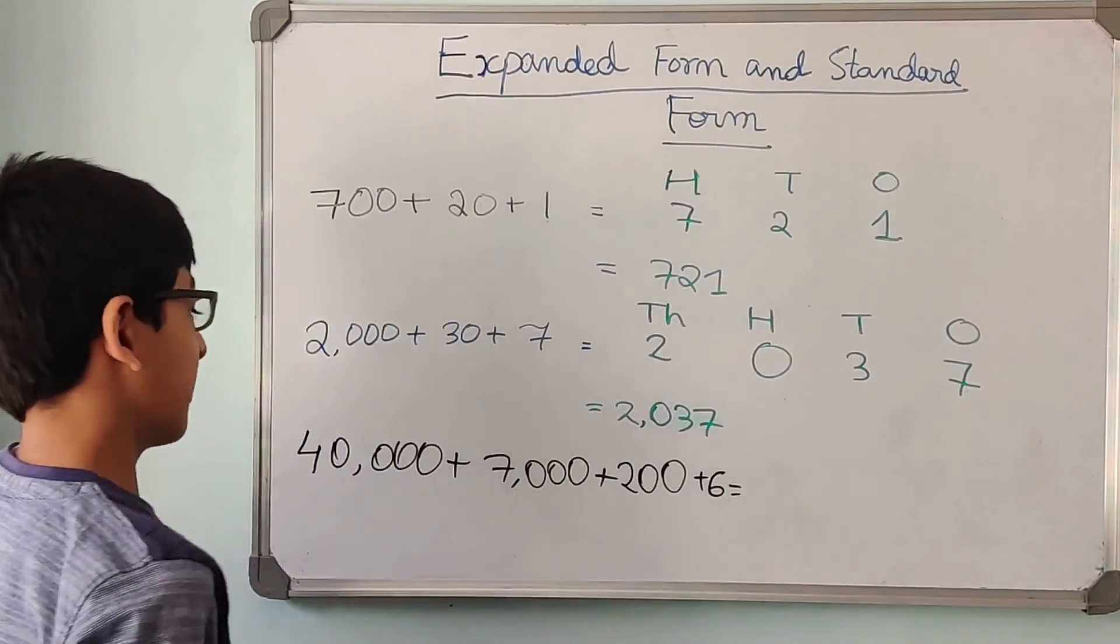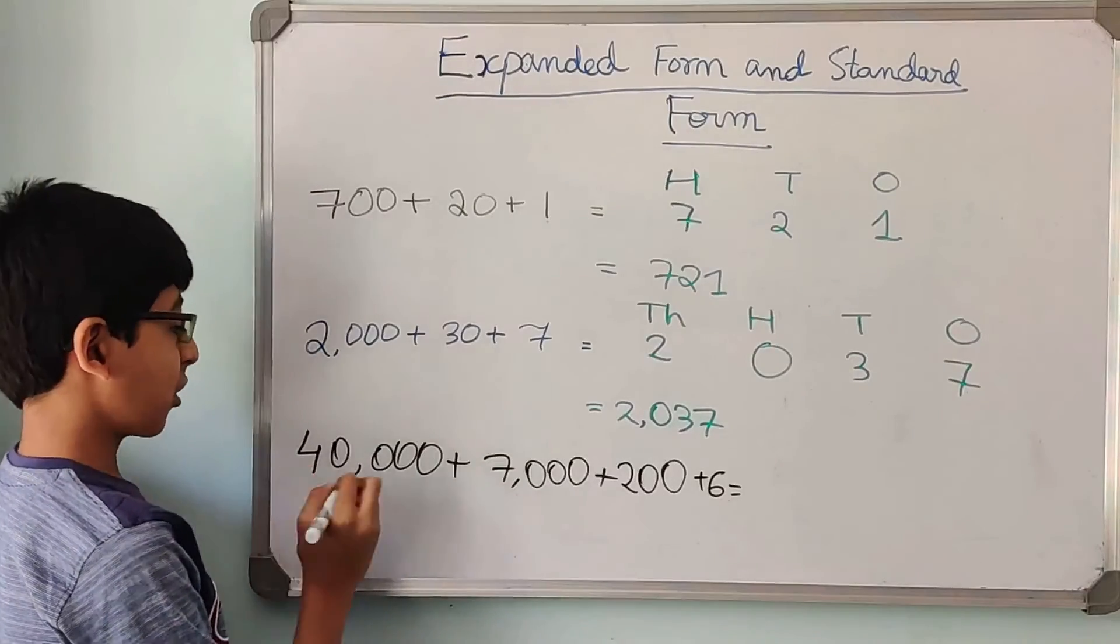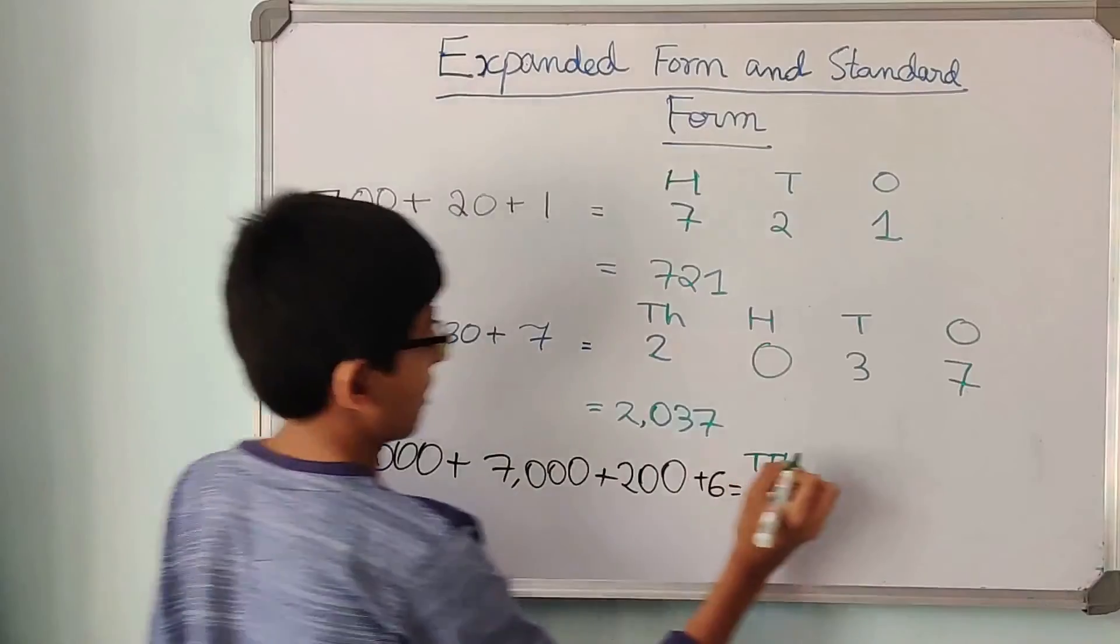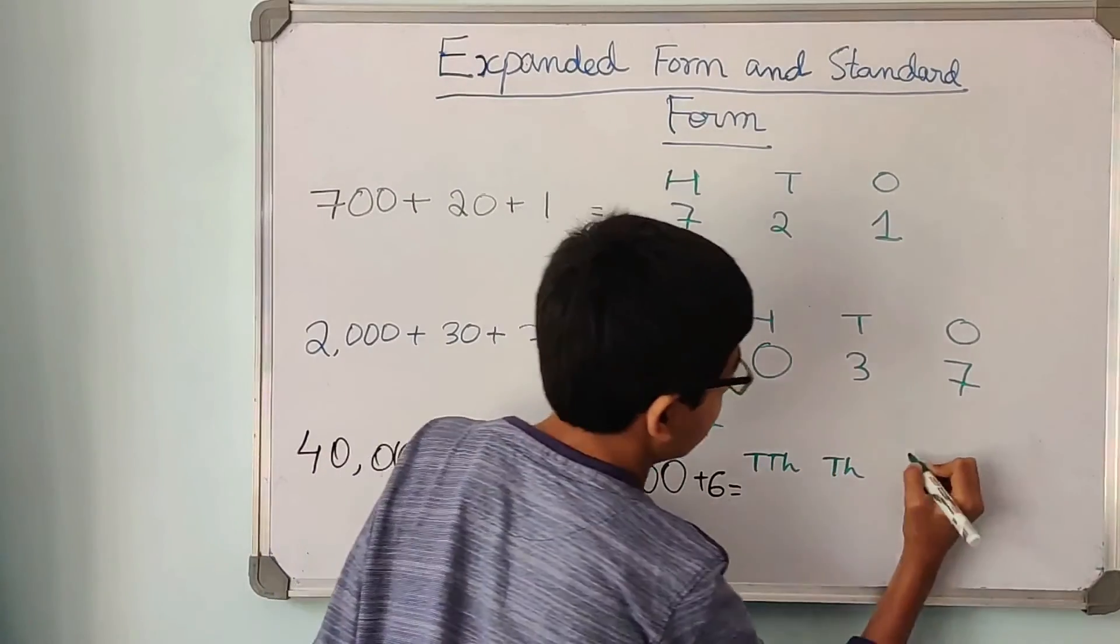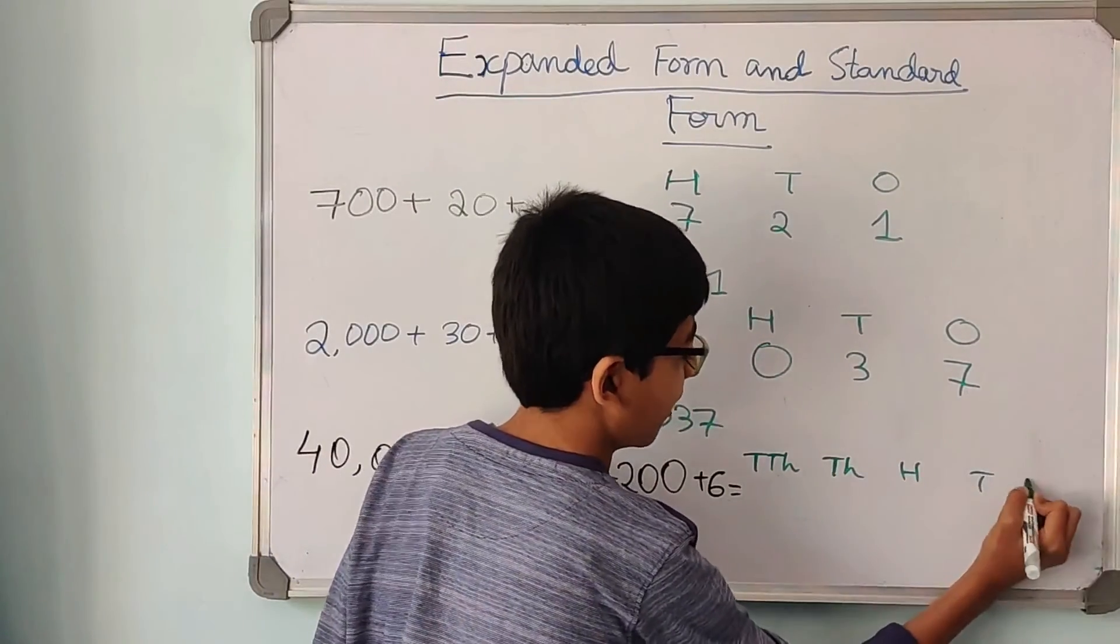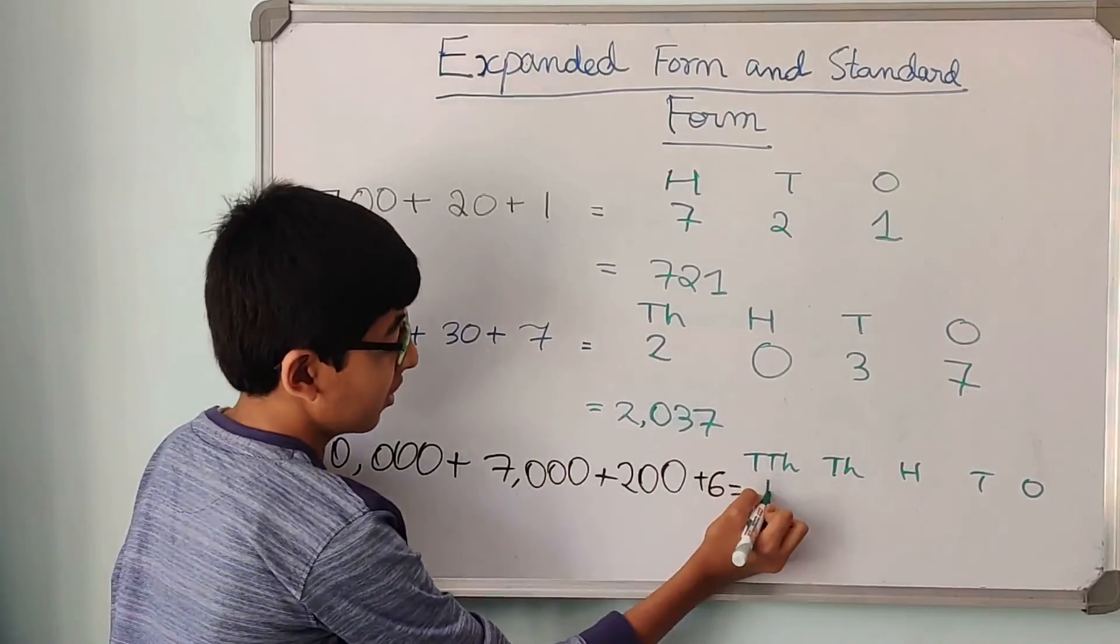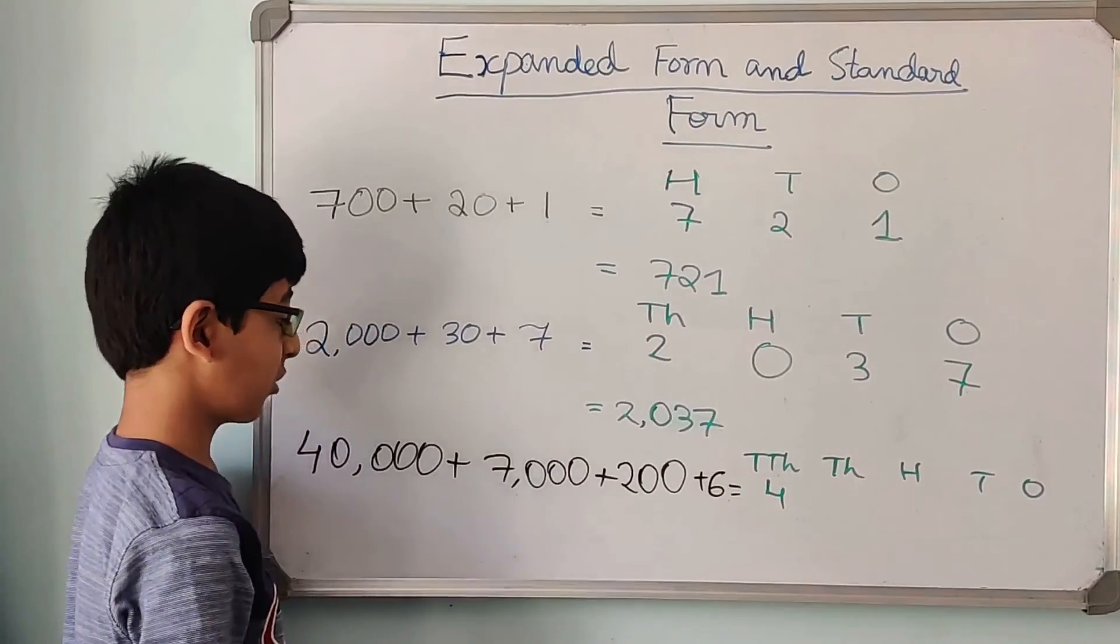Now let us try a last example. 40,000. This is the ten thousands place. And then we can write thousands, hundreds, tens, and ones. So we can see that 40,000, in that 4 would come in the ten thousands place.